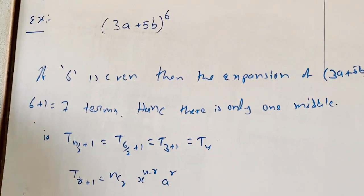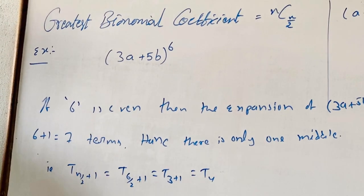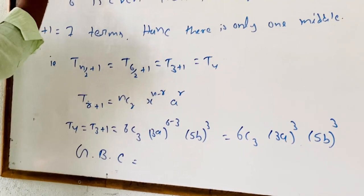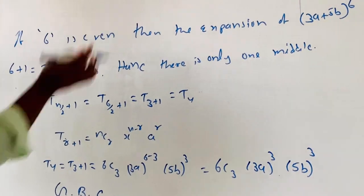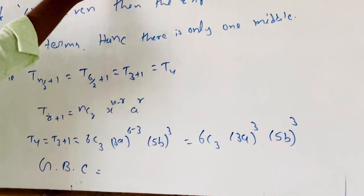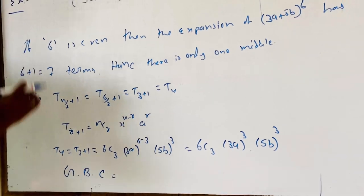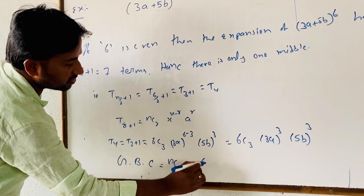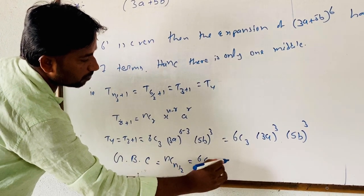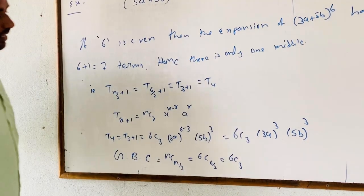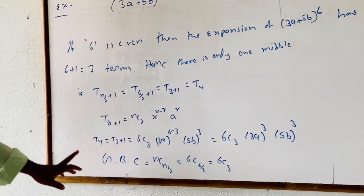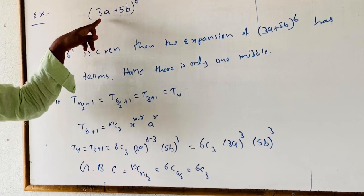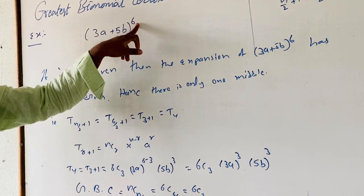Now observe the greatest binomial coefficient (GBC) in the expansion of (3a + 5b)^6. The greatest binomial coefficient is nC(n/2), which equals 6C(6/2) = 6C3. So 6C3 is the greatest binomial coefficient in the expansion of (3a + 5b)^6.